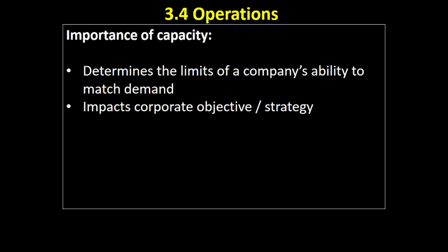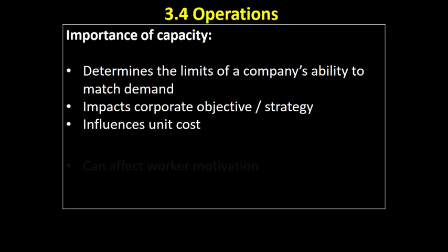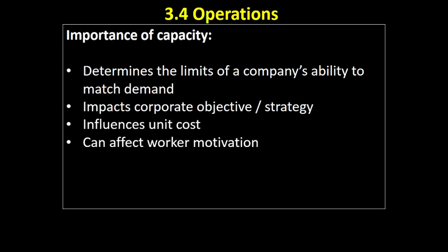Capacity limits profitability — they can't sell all the tickets they'd possibly be able to. It impacts corporate objectives and strategy. For example, if Manchester United wanted to maximise ticket sales revenue by increasing capacity, it might set itself a corporate objective of expansion. It's also going to influence your unit cost — the more efficiently you're using your labour and capital, the cheaper your unit cost will be. It can affect workforce motivation, as discussed in the previous video.